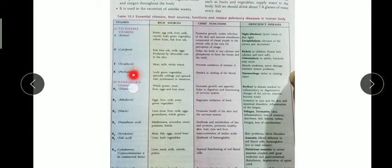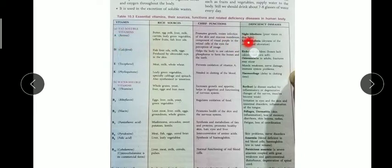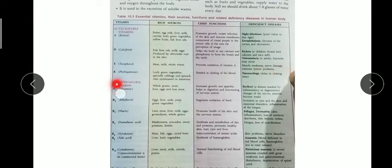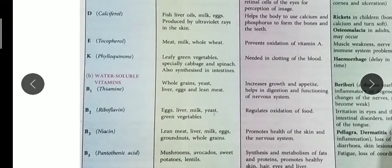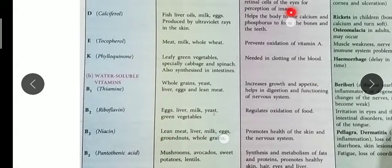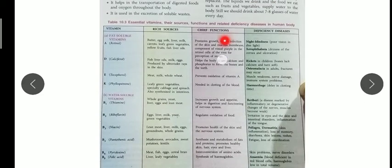In table 10.3, fat-soluble and water-soluble vitamins are listed with their biological names. For example, vitamin A is called retinol and its deficiency causes night blindness; vitamin D is calciferol and causes rickets; vitamin E is tocopherol and causes muscle weakness and nerve damage; vitamin K is phylloquinone and its deficiency causes hemorrhage. This table is a complete summary of vitamins.